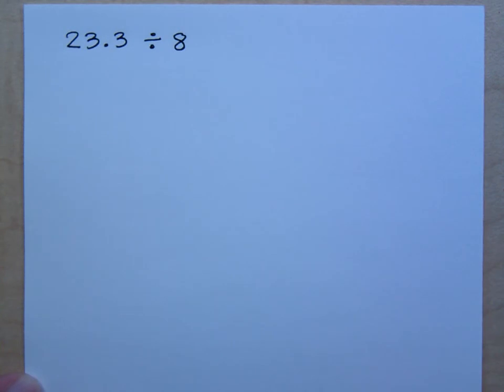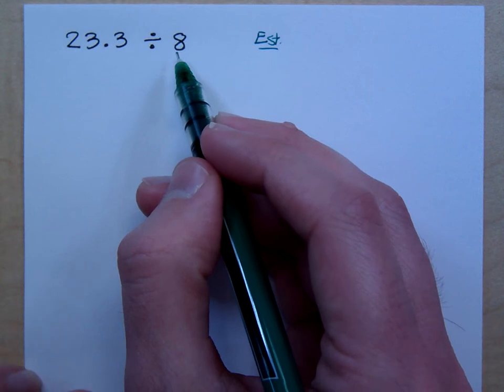Alright, let's take care of this guy. We have 23.3 divided by 8. Now, if we had to do an estimation here, how would you round 23.3? You might round it to 23, you might round it to 20. But look what you're dividing by. You're dividing by 8, right?